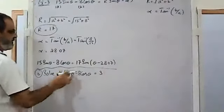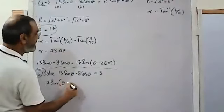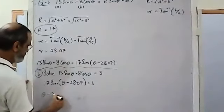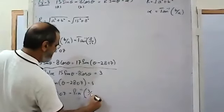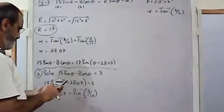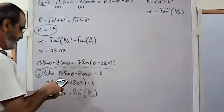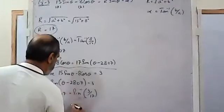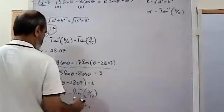For part (b), to solve 15sinθ - 8cosθ = 3, we replace the expression with 17·sin(θ - 28.07°) = 3, so θ - 28.07° = sin⁻¹(3/17). Using the calculator: sin⁻¹(3/17) = 10.16°.